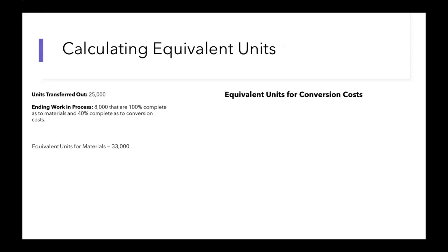Now for equivalent units for conversion costs, it's going to be slightly different. What we need to do is consider that 40% that we're told. So we still take all 25,000 of the units that were transferred out, but then we add in 40% of our 8,000 units in our ending work in process, because those 8,000 units are only 40% complete as to conversion costs. When you take 40% of 8,000 you get 3,200, so our equivalent units for conversion costs would be 28,200.